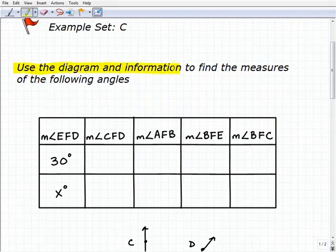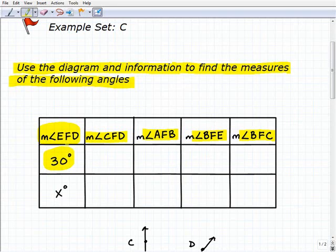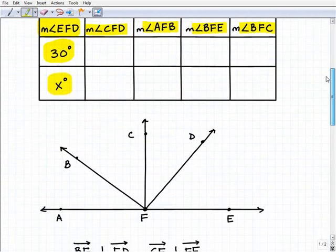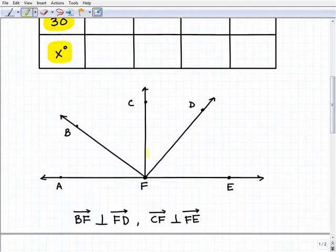We're going to use a diagram and some given information to find the measures of the following angles. We have a measure of angle EFD, and we need to find all these other angle measures in our diagram. So let's take a look at our diagram here.